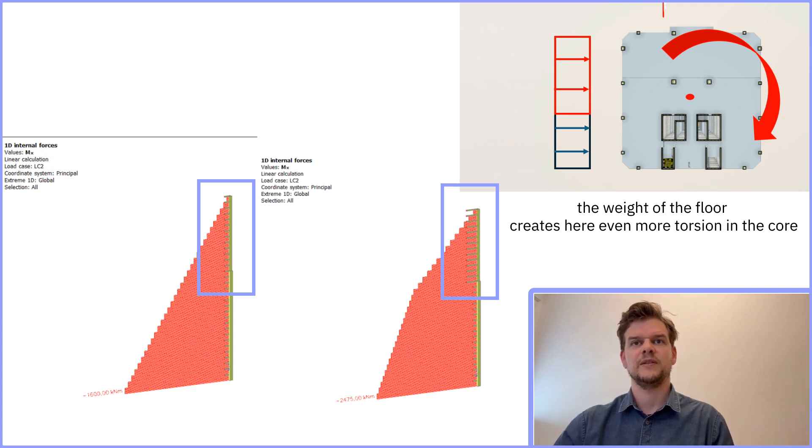You can see it clearly here. The lever arms highlighted in blue are twice as long. That longer distance between the mass and the core creates a much larger torsional moment at the base of the structure. This is why even small changes in geometry at the top can lead to major stress and damage down below.